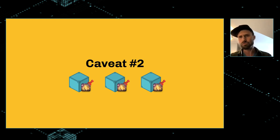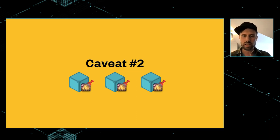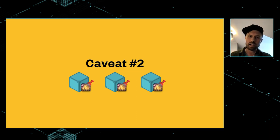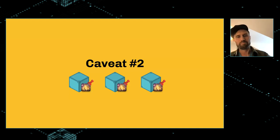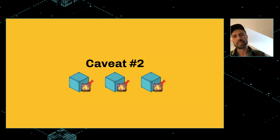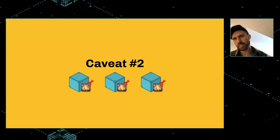Even if the content is super popular and lots of people have it on the IPFS network, it could still eventually exit the network if no one is pinning it and garbage collection runs. These two caveats are generally why developers use a third-party service like Pinata, like Textile, like Fleek to store their content — because they have nodes that are publicly available, stay online 24/7, and they pin the content so that it doesn't disappear off the network.